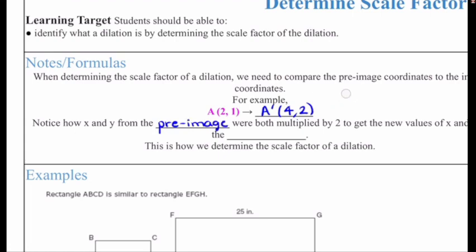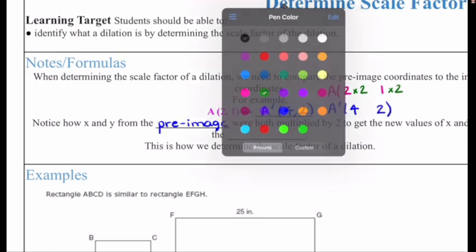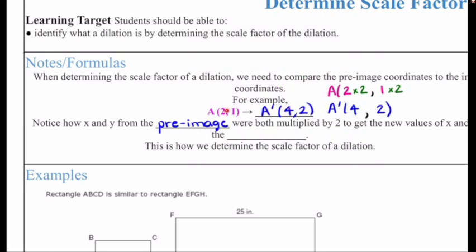For example, the x coordinate of A was 2. To go from 2 to A prime, which is now at 4 for the x coordinate, I have to multiply 2 times the scale factor, which in this case is 2 times 2 gives us 4. Then the other point was 1. Again, 1 times 2 gives us our y value, which is at 2. So whenever you're trying to figure out what the scale factor is, you always want to look and compare the pre-image coordinate to the image coordinate.